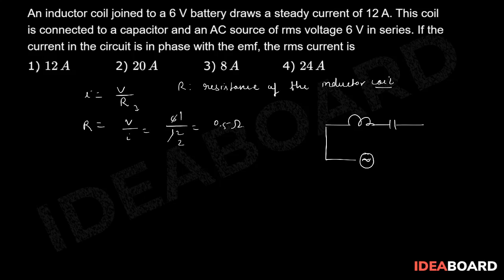That means the impedance of the circuit Z will be equal to square root of R squared plus (XL minus XC) whole squared. We know this formula. Now here, this R is actually coming because of this coil.